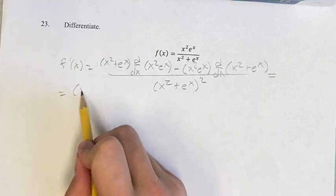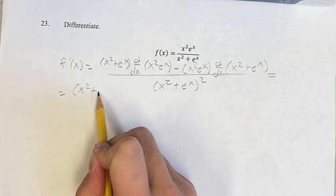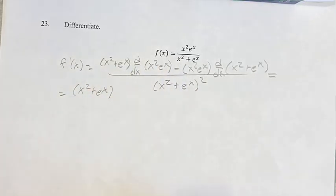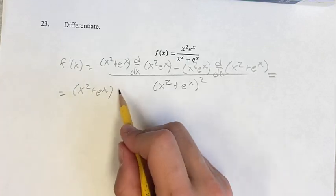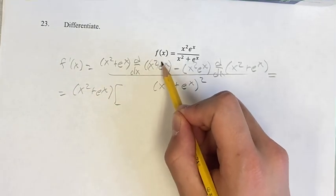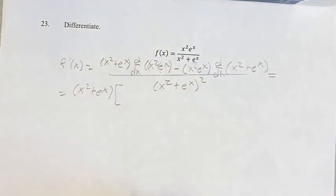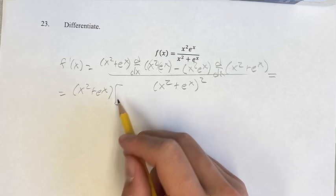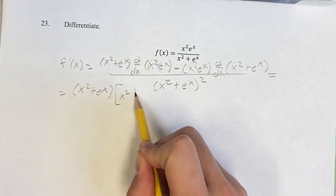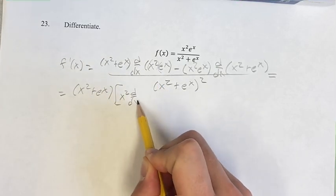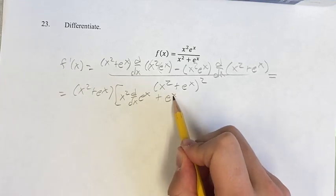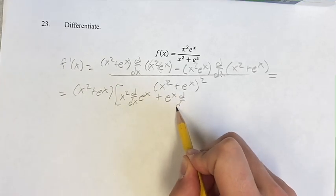So the first step is calculating those derivatives. The derivative of x squared e to the x — we're going to use the product rule. So it's x squared times e to the x, so the derivative is going to be x squared times the derivative of e to the x, plus e to the x times the derivative of x squared.